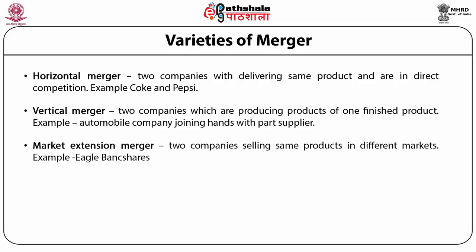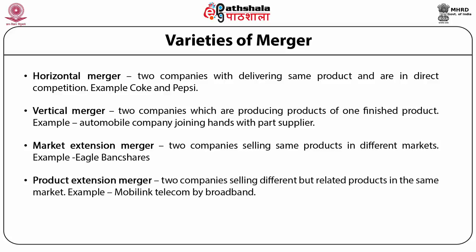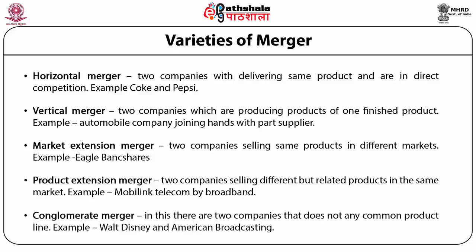Third, a market extension merger, where two companies sell the same product in different markets — for example, Eagle Band shares. Or a product extension merger, where two companies sell different but related products in the same market — for example, MobileLink Telecom by broadband. A conglomerate merger involves two companies that do not have any common product line — for example, Walt Disney and American Broadcasting.